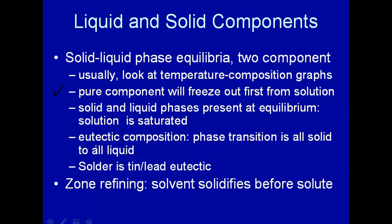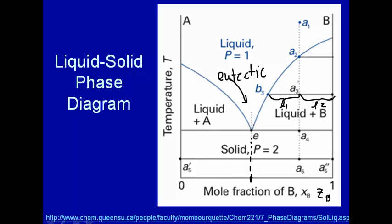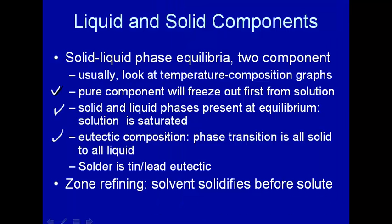Pure component will freeze out from solution first. Which pure component depends on where you are in the phase diagram. Solid and liquid phases are present at equilibrium. The solution is saturated. Right here you have solid and liquid, and it's saturated. For example, if you look at A as a solvent, B is saturated, because now you have pure B being frozen out. So in this case, A is saturated with solid B. And over here on this side, you have B, which is saturated with A, because you have solid A present.